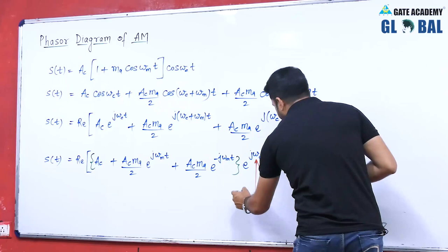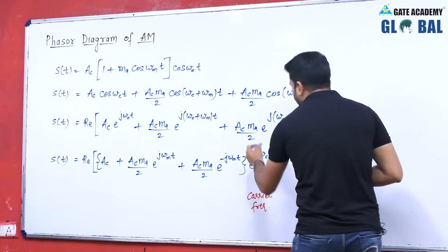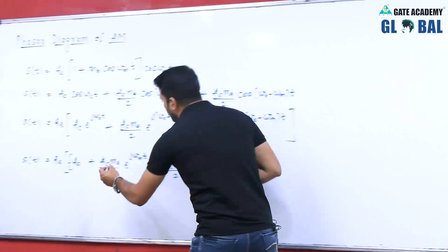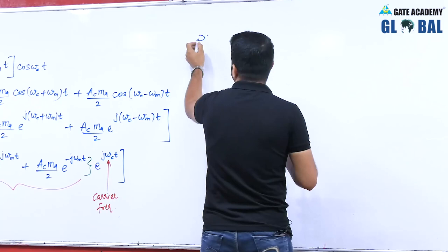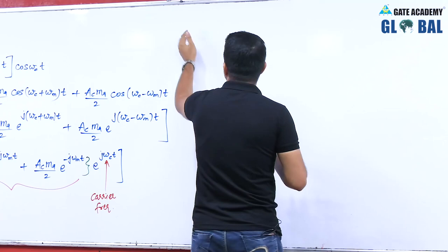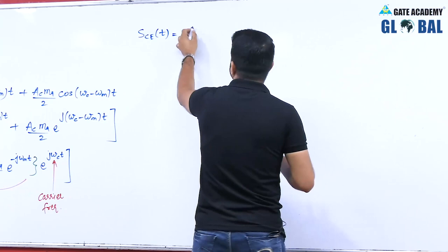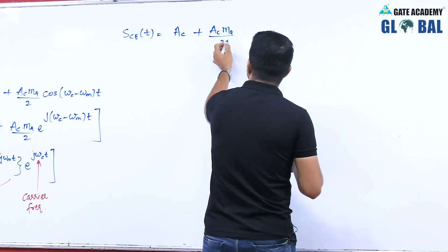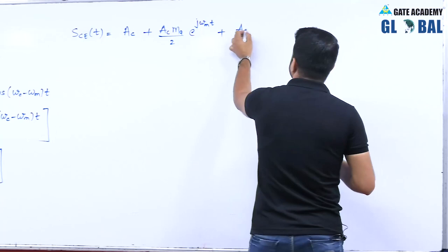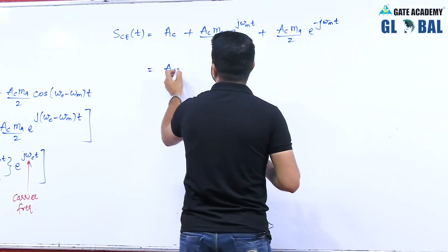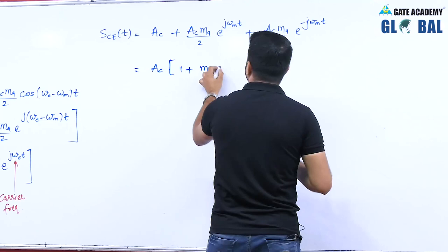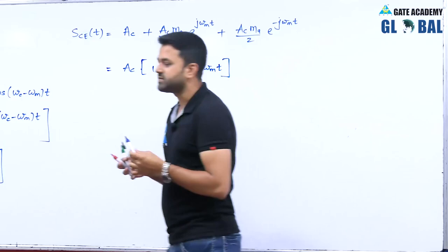We have already seen that when the carrier or reference frequency is the center frequency, the coefficient of this carrier frequency term gives the complex envelope. This whole bracketed term is nothing but the complex envelope of the AM signal. We can write it as Sc_e(t) = Ac + Ac·Ma/2·e^(jωmt) + Ac·Ma/2·e^(-jωmt), which simplifies to Ac(1 + Ma·cos(ωmt)) — the envelope of the signal.